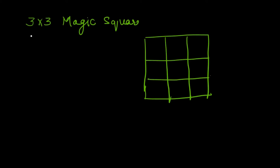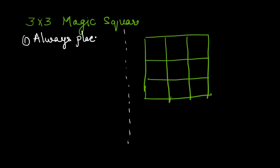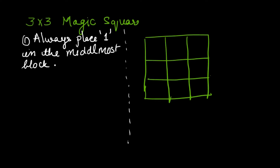The first rule says: always place the number 1 in the middle-most block of the last column. So which is the last column here? The last column is this one, and the middle-most block is this one — we place a 1 here. That is the first step.